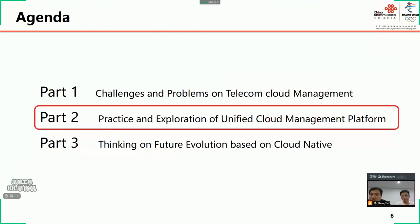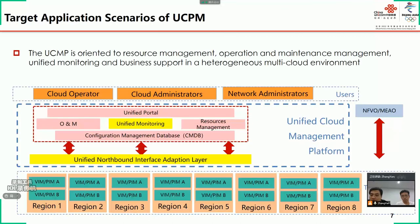As an important infrastructure management component, UCMP is in line with the overall planning of telecom cloud in functional design and construction. Now we go to the second part: practice and exploration of the unified cloud management platform. The UCMP is oriented to resource management, operation and maintenance, unified monitoring, and business support in a heterogeneous cloud environment. In this picture, we can see the UCMP contains six modules.